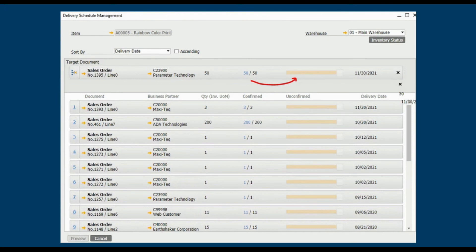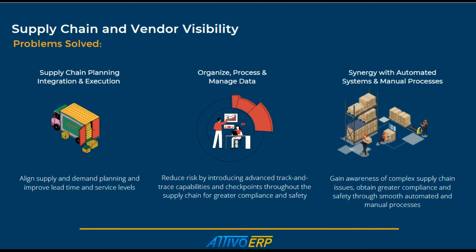Since this delivery schedule is already confirmed to ship 50 colored printers to the customer, the yellow bar is grayed out. With SAP Business One, supply planning is no longer a challenge because of the inventory status visibility. You can align supply and demand planning while creating and improving lead times and providing better service. Moving inventory using a warehouse management system is much more efficient than using email for supply chain management and communications. Reducing risk by effectively organizing, processing, and managing data is achievable based on the warehouse management system and its track and trace capabilities such as item availability to promise. This demonstration was only a sample of how automated and manual processes can work together using features such as delivery rescheduling and available to promise to streamline your supply chain for better compliance and safety.